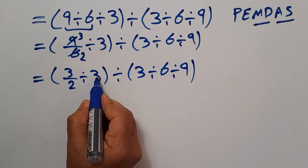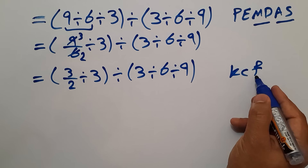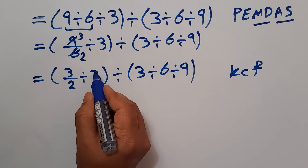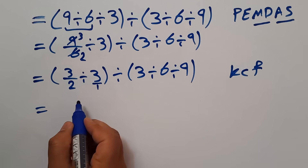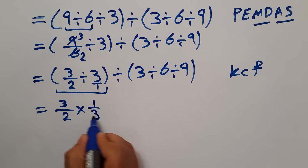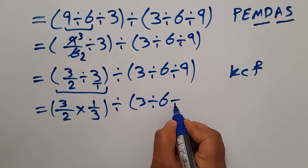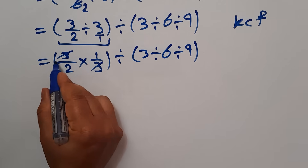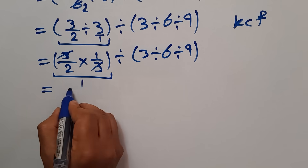3 over 2 divided by 3 — according to the KCF rule, K stands for keep, C stands for change, and F stands for flip. Keep the first fraction, change division to multiplication, and flip the second fraction. The second fraction is 3 over 1, so these parentheses can be written as 3 over 2 times 1 over 3, divided by 3 divided by 6 divided by 9. These 3s cancel each other out and we have 1 over 2, so these parentheses equal 1 divided by 2.